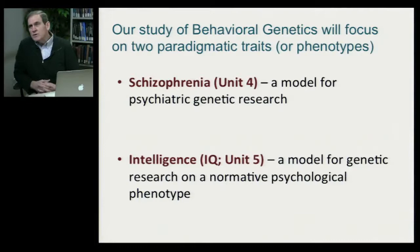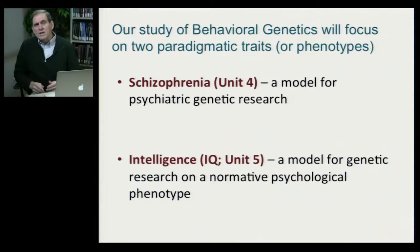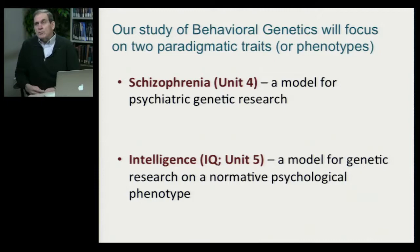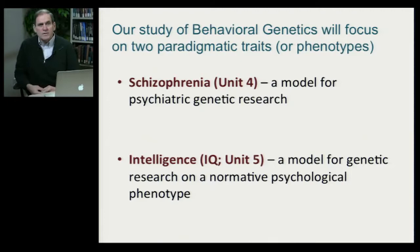In this course, it'd be difficult and probably a little tedious to go through a whole bunch of different psychological traits and talk about the behavioral genetic research on those traits. What I've decided to do is focus on two paradigmatic psychological traits and how genetics has shaped our understanding of these traits. In the fourth unit, we'll talk about schizophrenia, which is also a psychiatric trait, as representative of behavioral genetic research — not only on a psychiatric trait, but on a trait that's essentially an either-or: it's a diagnosis, you either have it or you do not.